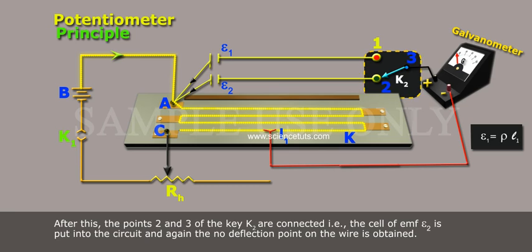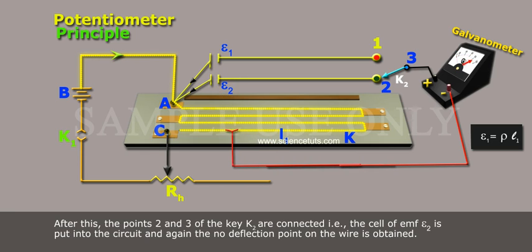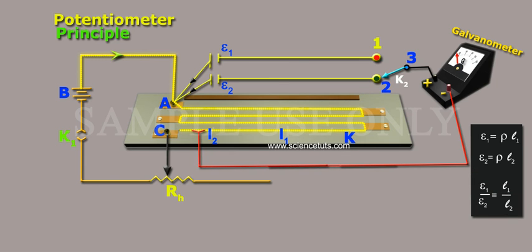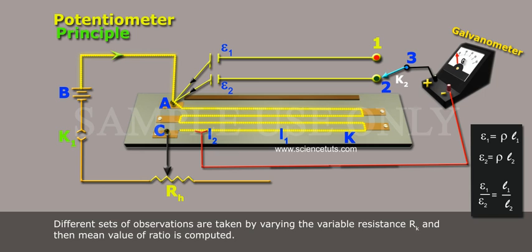After this, the points 2 and 3 of the key K2 are connected, that is, the cell of EMF Epsilon-2 is put into the circuit and again the no deflection point on the wire is obtained. Let this reading be L2, then Epsilon-2 equals to rho L2, Epsilon-1 by Epsilon-2 equals to L1 by L2. Different sets of observations are taken by varying the variable resistance RK and then mean value of ratio is computed.